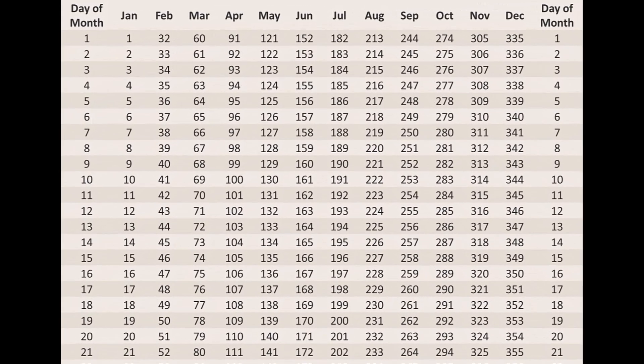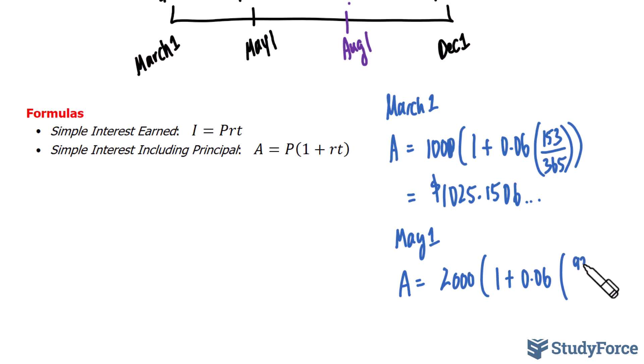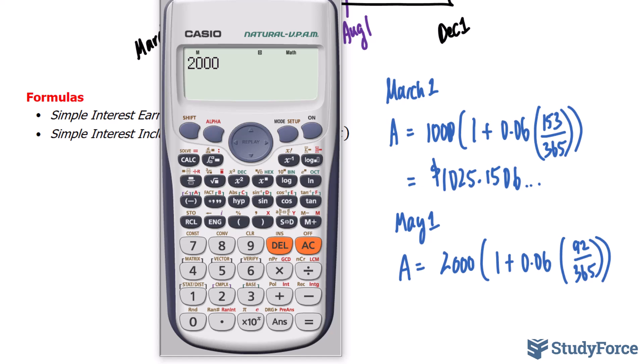According to this chart, May 1st is the 121st day of the year, and again, August is the 213th. If we take their difference, that makes up 92 days. So, 92/365. And again, we'll compute this. If you do it correctly, you should end up with the following computation. Again, we'll skip the rounding and write down 2030.2465.